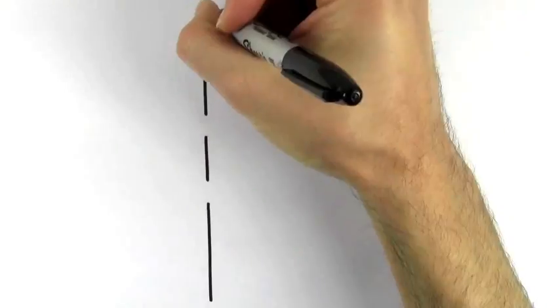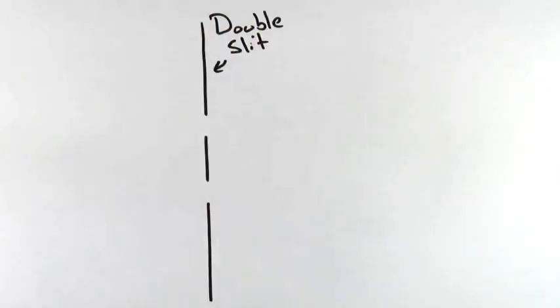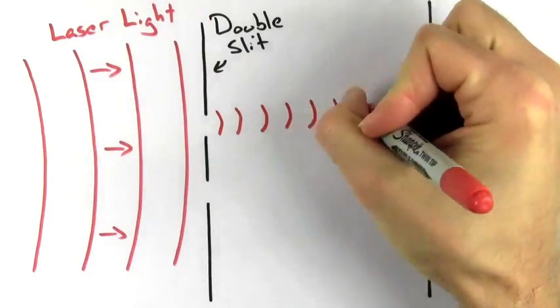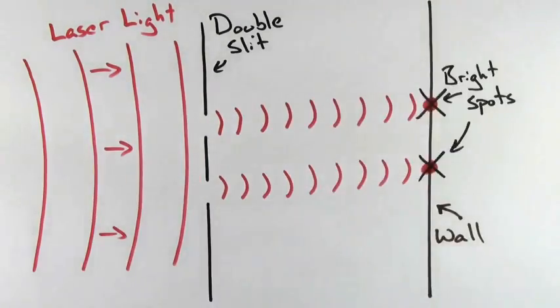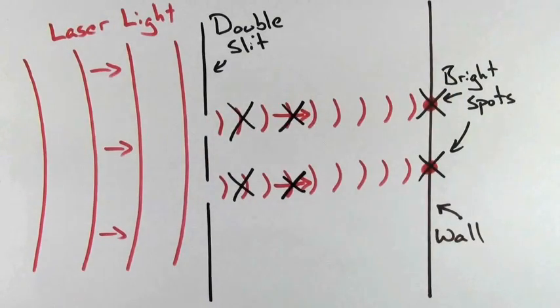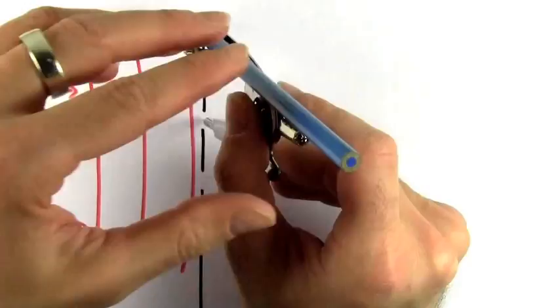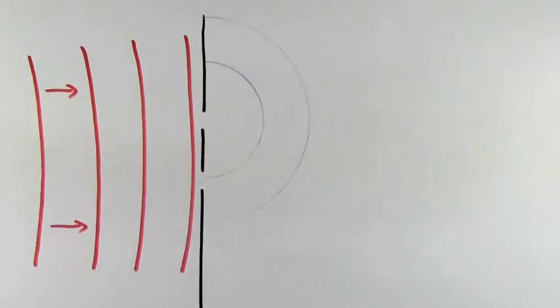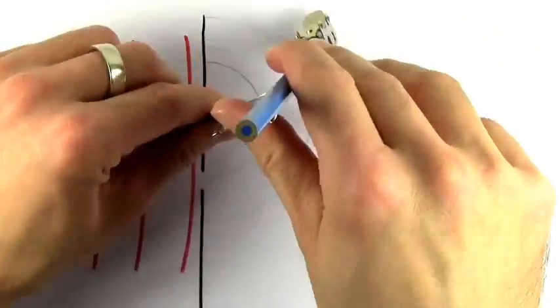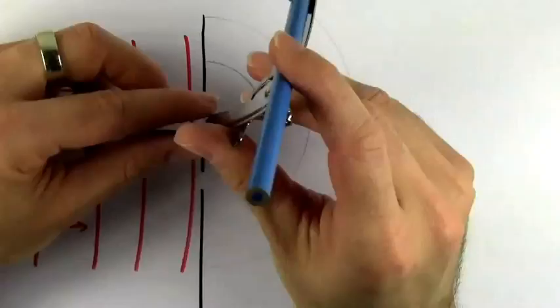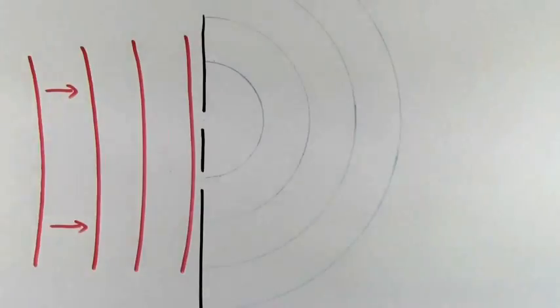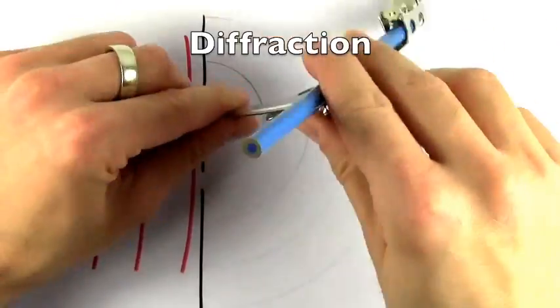Why are there so many bright spots here, and why don't you just see two thin slivers of light behind the two thin slits? We see more than two bright spots because light doesn't just travel in straight lines after it passes through a hole. Light will actually spread out when it encounters a hole. This spreading out is called diffraction.